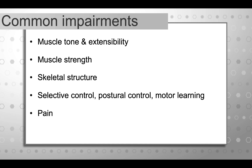Some common impairments in cerebral palsy: muscle tone and extensibility is huge. The vast majority of children with CP have high tone and spasticity. Even though that spasticity makes muscles seem tight and can be mistaken for strength, the underlying strength of the muscles is actually very low. Skeletal structure can also be an issue — because bones and joints often develop as a result of movement and weight bearing, when kids don't have the opportunity to stand and move in typical patterns, bones can form differently, causing hip and foot issues. Selective control, postural control, and motor learning can be issues, requiring work on motor planning, giving kids lots of practice, developing postural control for good distal mobility. And pain is often an issue for individuals with cerebral palsy.